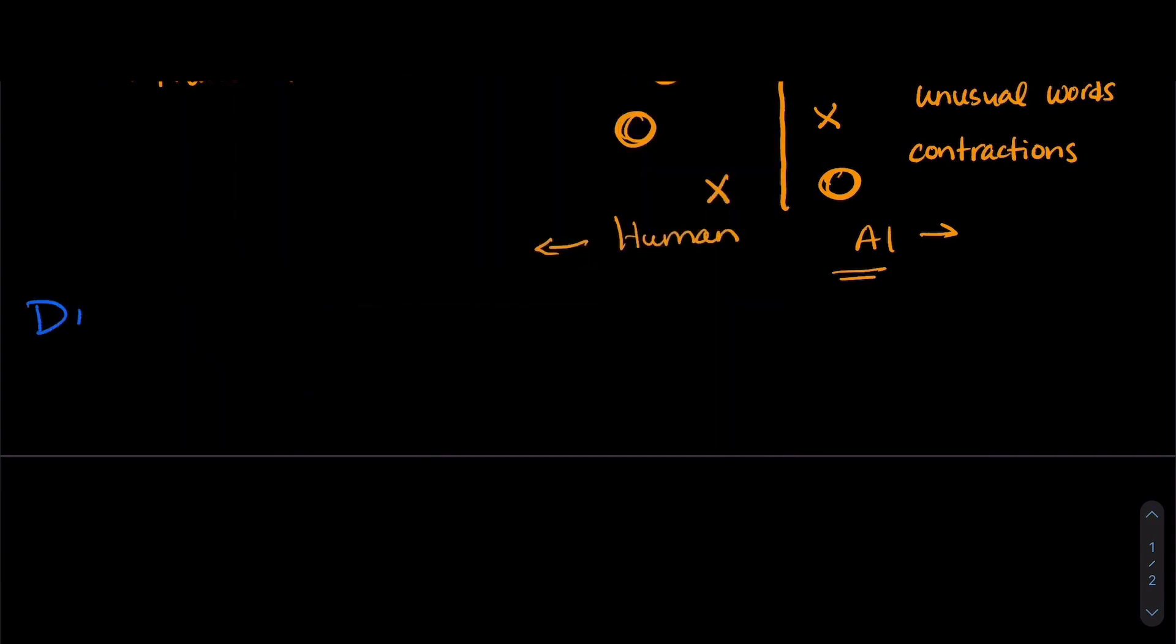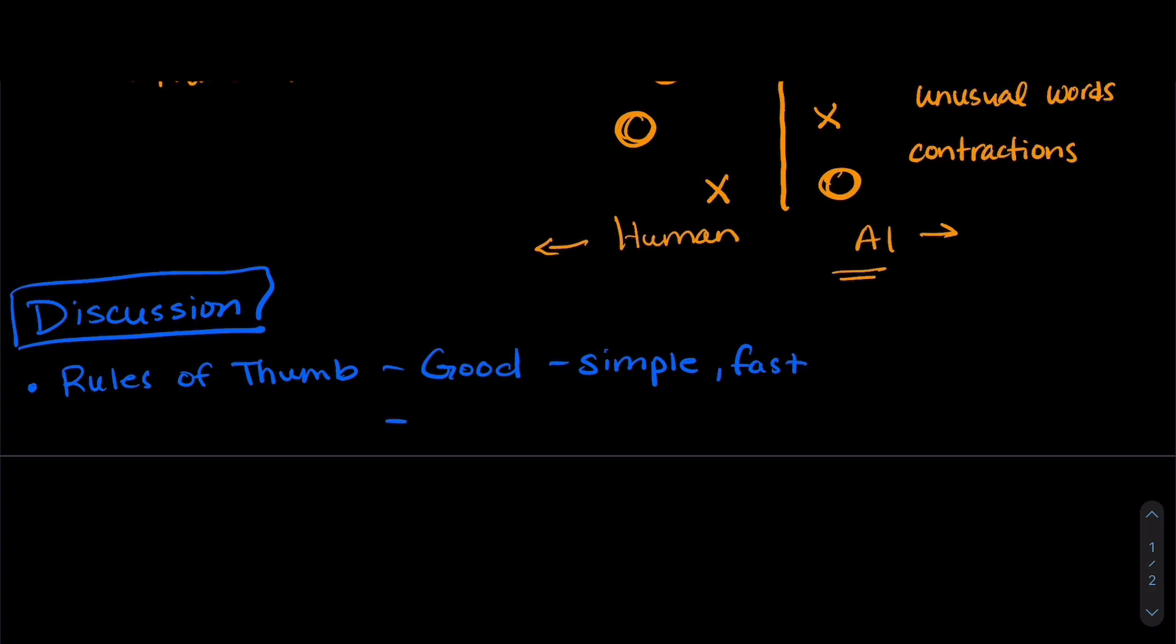Let's get a little discussion going on. First of all, these rules of thumb, they can be good because they're simple and they're fast to make decisions. But they can also be bad because they could give us the wrong answer. And they're also predictable.